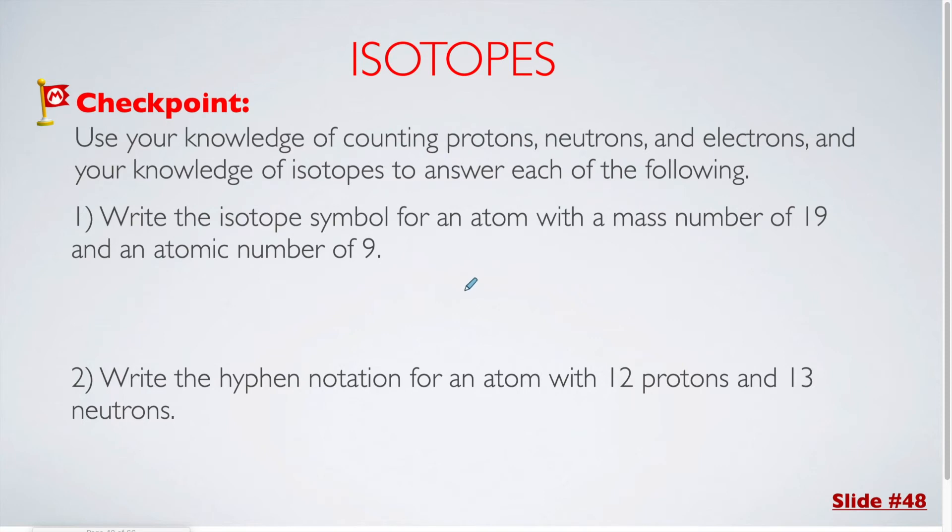For this one, the first thing we need to do is figure out what element we're talking about, and we have an atomic number of 9. If you use a periodic table, that matches up with fluorine. The atomic number goes in the bottom corner, and the mass number goes on top.